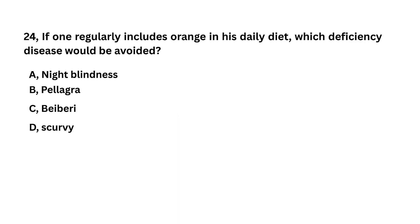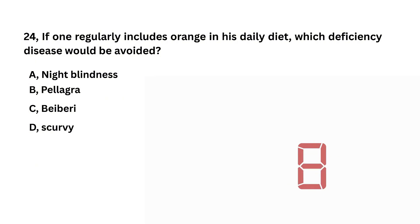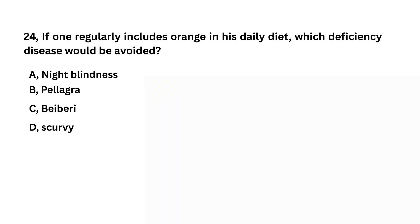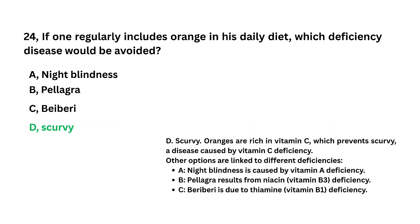If one regularly includes oranges in their daily diet, which deficiency disease would be avoided? Night blindness, pellagra, beriberi, scurvy. Scurvy is the answer.